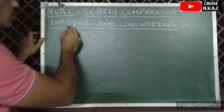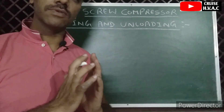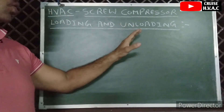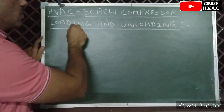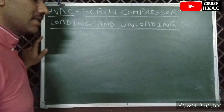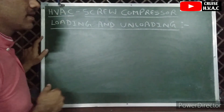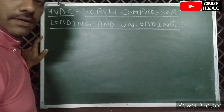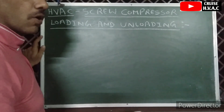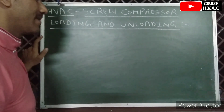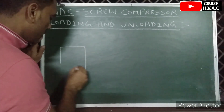Today our topic is the screw compressor in HVAC — specifically what loading and unloading means. When the compressor is on high load, how does the mechanism inside work? And when the compressor is on low load, how does the mechanism work? For the screw compressor especially, there is one device called the sliding valve. This sliding valve controls the flow of refrigerant in the screw compressor according to loading and unloading. The key component in this mechanism is the four-way solenoid valve.